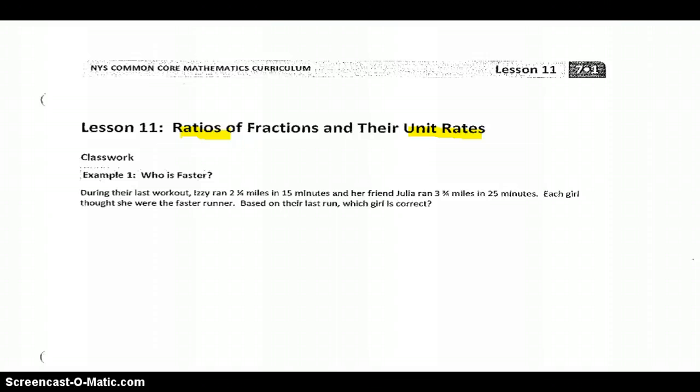Izzy ran 2 1/4 miles, that took her 15 minutes. Then we have Julia, she ran 3 3/4 miles and it took her 25 minutes. Each of the girls is thinking one is faster than the other, but we want to see which girl is actually correct.